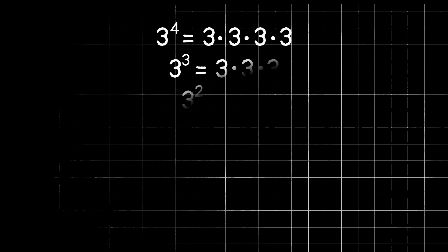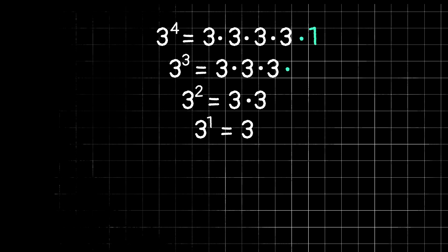You could also think of it this way: you can always multiply by 1 without changing anything. So looking back at our list, we can add a 'times 1' to each expression. We'd have 3×3×3×3×1, then 3×3×3×1, and so on. For 3 to the 0 power, we're left with just 1, because we're never multiplying by 3 — it's telling us to multiply by 3 zero times.